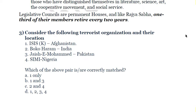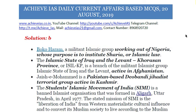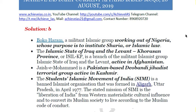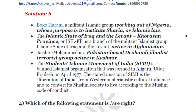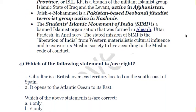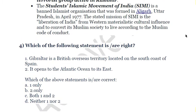The fourth pair is incorrect because SIMI (Students Islamic Movement of India) is based in India, not Nigeria. SIMI is a banned Islamist organization formed in Aligarh, Uttar Pradesh in April 1977, with the stated mission of liberating India from Western materialistic cultural influence and converting its Muslim society to live according to the Muslim code of conduct. So the answer is B — first and third are correctly matched.